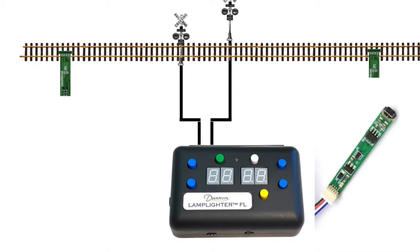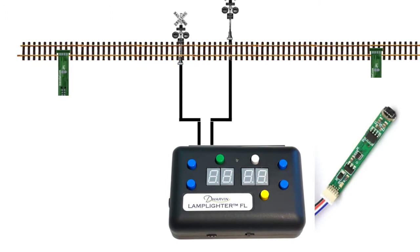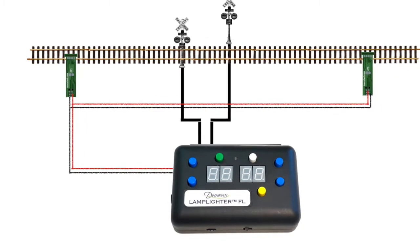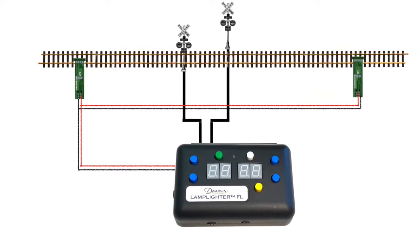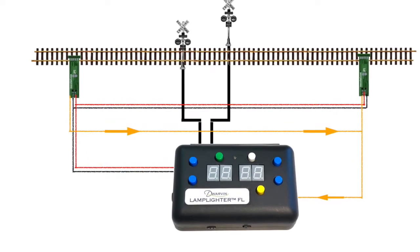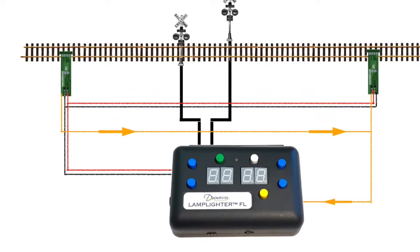Those get mounted underneath the rail track itself and then these get connected through power from the lamplighter flasher unit as you can see in the diagram and their outputs are connected to the input trigger of the lamplighter flasher unit.